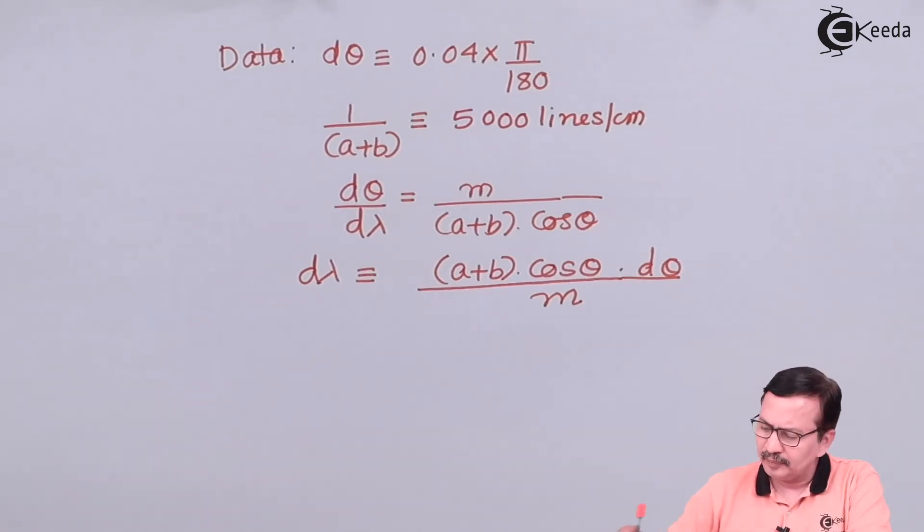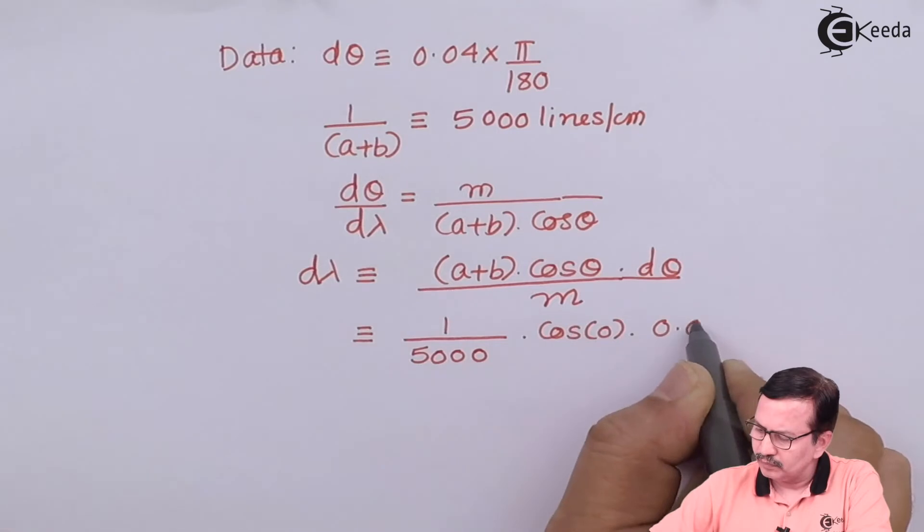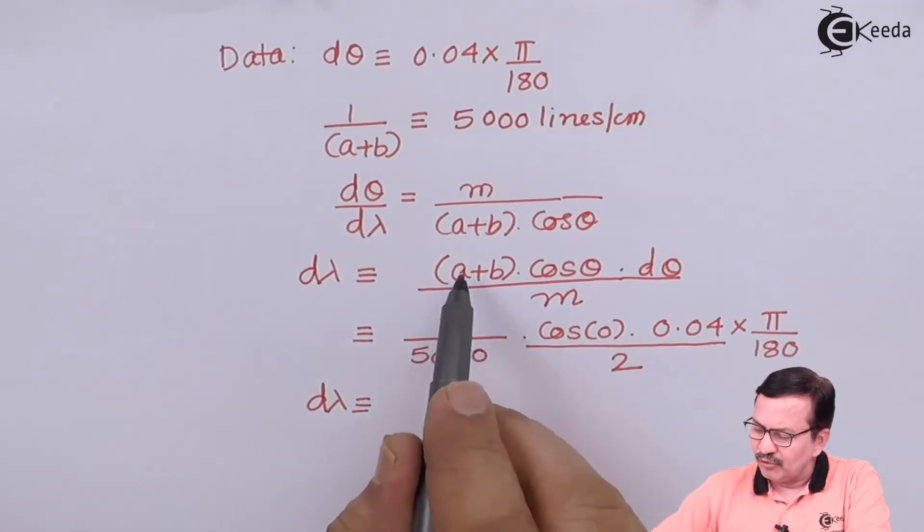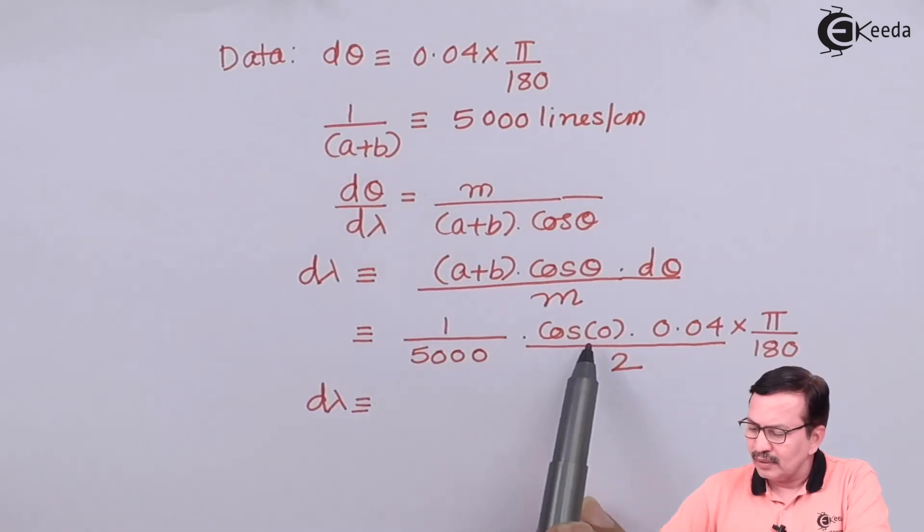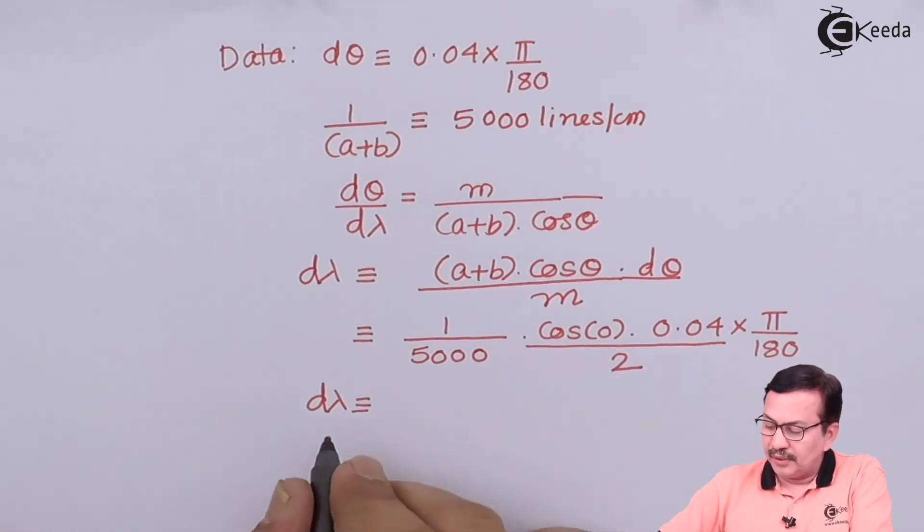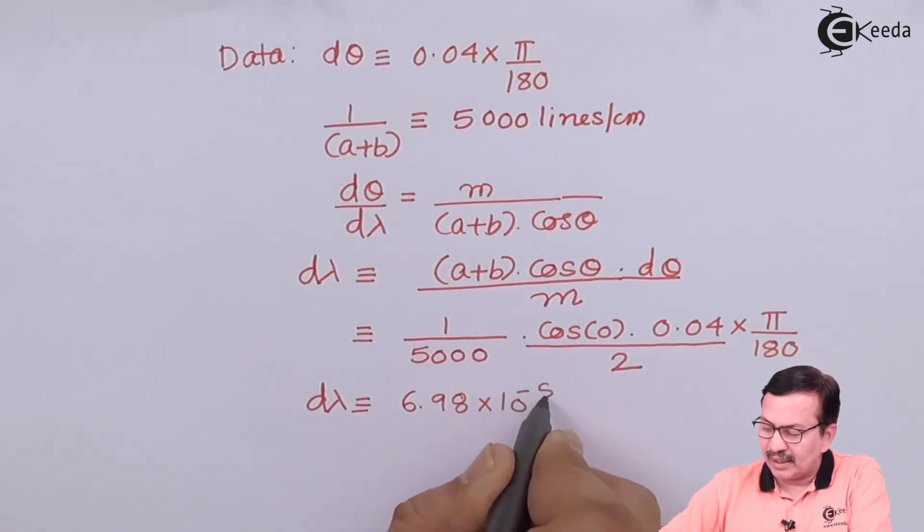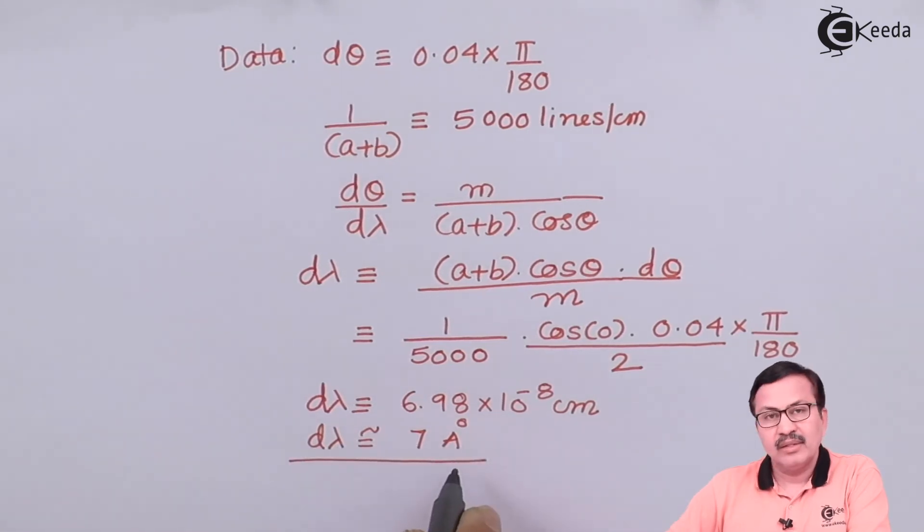We substitute the respective values. Since 1/(a+b) is 5000 lines per centimeter, we are writing this as 1/5000. We are taking θ equals 0 therefore it is cos 0, and your dθ equals 0.04π/180 divided by 2 which is the order. Your dλ equals 6.98×10^-8 centimeters, which will be approximately equal to 7 angstroms.